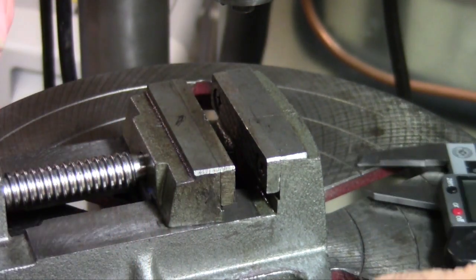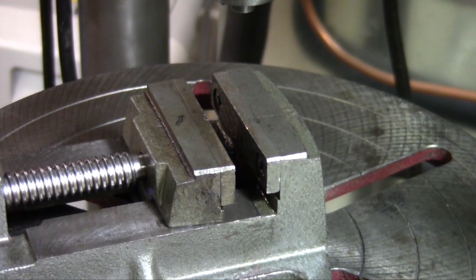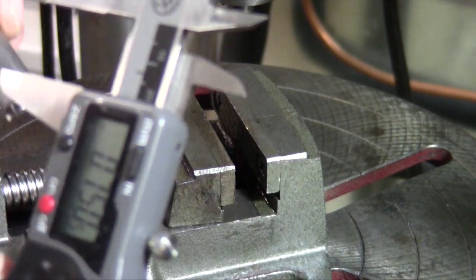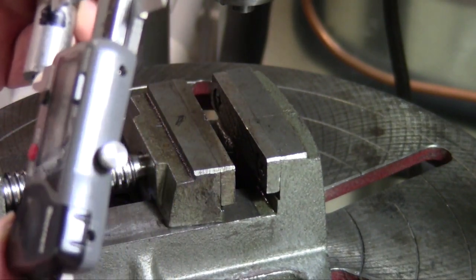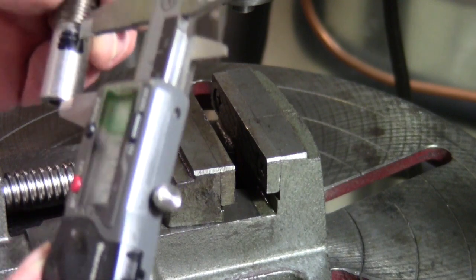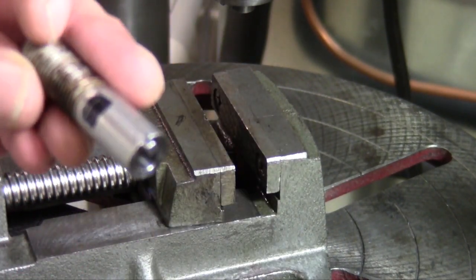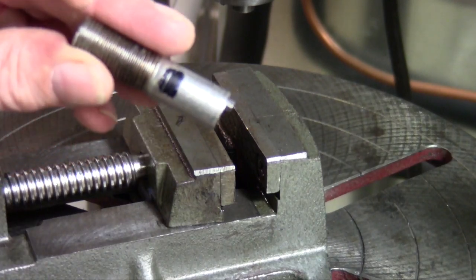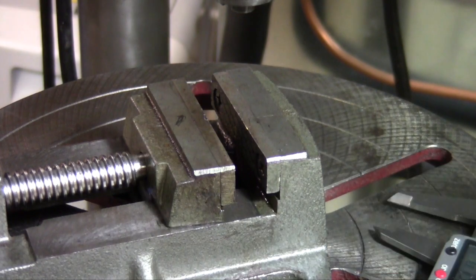I've scribed a mark where I want these holes. I want the holes at 750 thousandths, so I've scribed a little mark right there, used the Sharpie for dye cam, and then I put a mark on it.